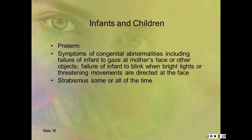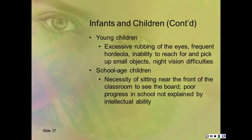For infants and kids: find out if they were preterm and if they have any symptoms of congenital abnormalities, like failure to gaze, not blinking with bright lights, or strabismus. Babies under bili lights have their eyes taped shut to protect retinas. In young children, look for excessive rubbing of the eyes, frequent hordeolums or styes, inability to reach for and pick up small objects, night vision difficulties, sitting near the front of the classroom to see the board, or poor progress in school not explained by intellectual ability.